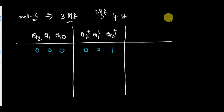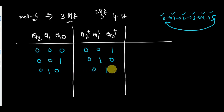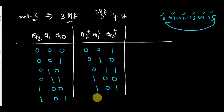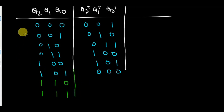Let me start from 0,0,0. The states are: 0,0,0 → 0,0,1 → 0,1,0 → 0,1,1 → 1,0,0 → 1,0,1, then back to 0,0,0. Counting the states: 1, 2, 3, 4, 5, 6 — six states completed. So the sequence goes 0 → 1 → 2 → 3 → 4 → 5 → 0.